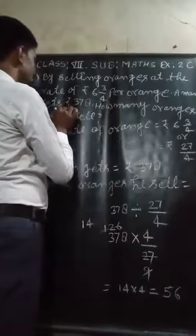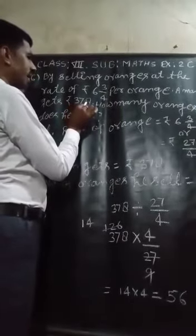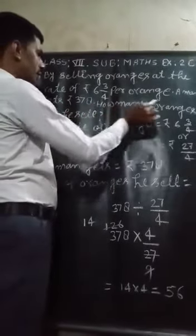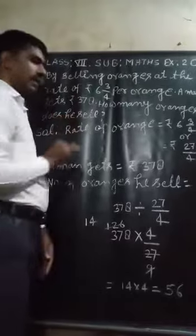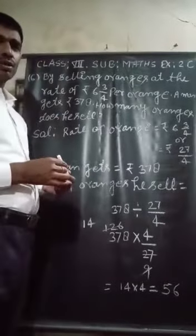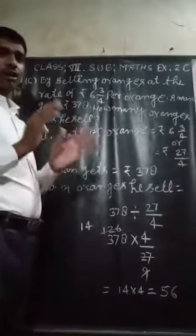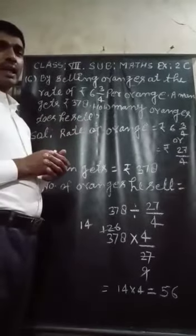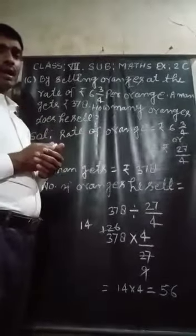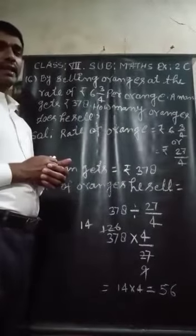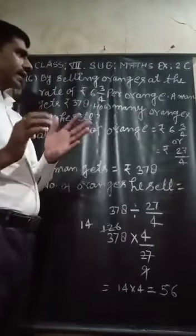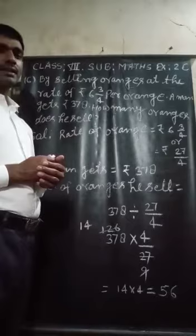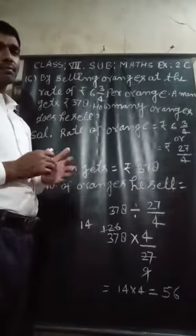Then, a man gets Rs. 378. How many oranges does he sell? So, 1 orange costs 6 whole 3 upon 4, and at all, a man gets Rs. 378. Then, how many oranges he sell?